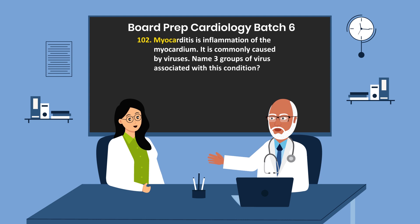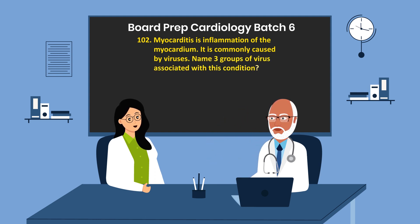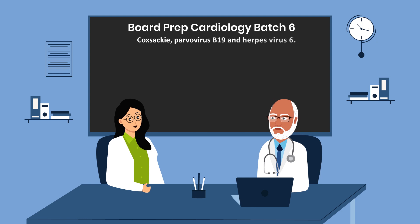Question 102. Myocarditis is inflammation of the myocardium. It is commonly caused by viruses. Name three groups of virus associated with this condition. Coxsackie, Parvovirus B19, and Herpesvirus 6.